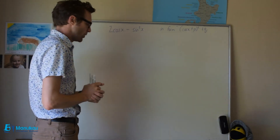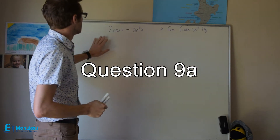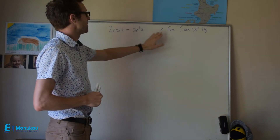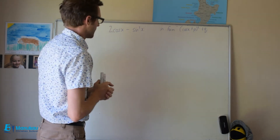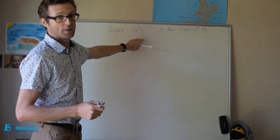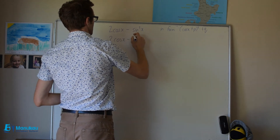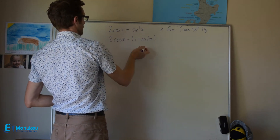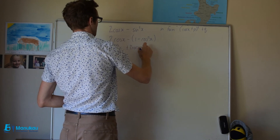For our final question in this video, question 9a and b — part a is asking us to express 2 cosine x minus sine squared x in the form cosine x plus p, all squared plus q. First of all, we want to turn sine squared x into cosines using our identity. So my first step is: minus one minus cosine squared x. Putting this all together, we get cosine squared x plus 2 cosine x minus 1.